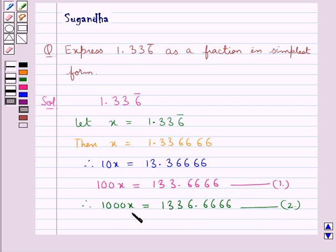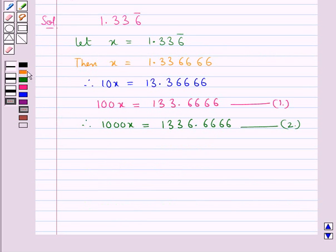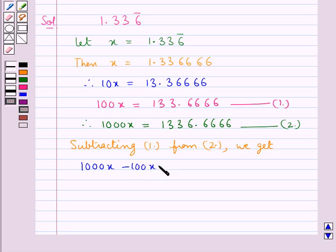Now subtracting equation 1 from equation 2 we get 1000x minus 100x is equal to 1336.6666 minus 133.6666.